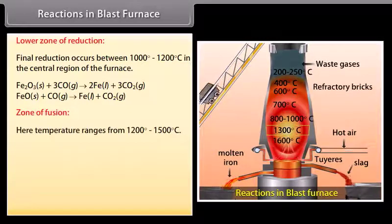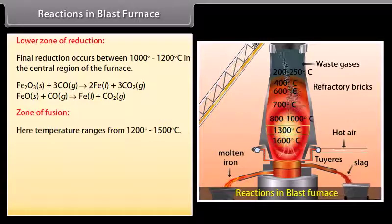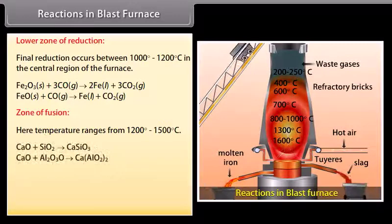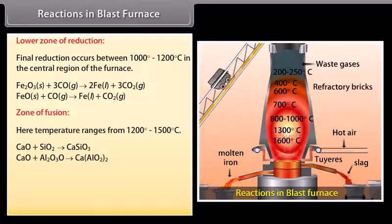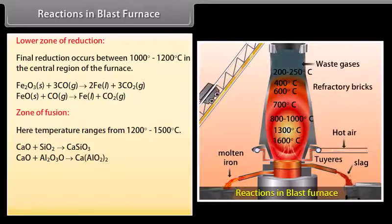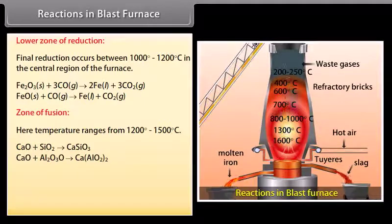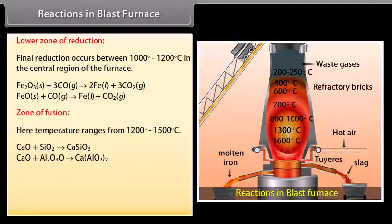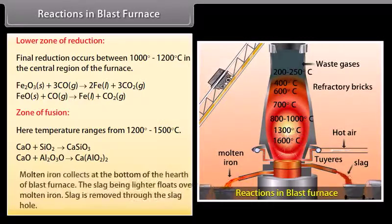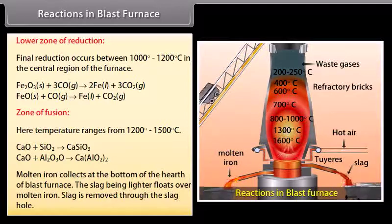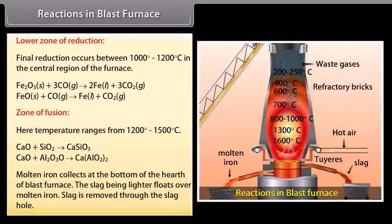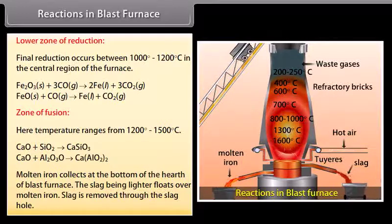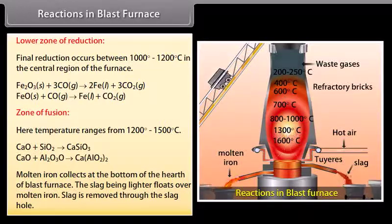Here, temperature ranges from 1200 degree to 1500 degree Celsius. Limestone decomposes into calcium oxide which acts as a flux and combines with the impurities of SiO2 and Al2O3 and removes them as slag. Molten iron. Molten iron collects at the bottom of the hearth of blast furnace. The slag being lighter floats over molten iron. Slag is removed through the slag hole.